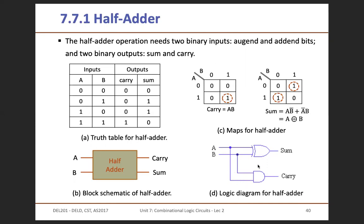We can draw the logic diagram of the half adder: it has an XOR gate and an AND gate. From the XOR gate, you get the sum output, and from the AND gate, you get the carry output. If you compare this logic diagram with the truth table, the carry output matches the truth table of the AND gate, and the sum output matches the truth table of the XOR gate. The block schematic of the half adder has two inputs A and B and two outputs carry and sum.